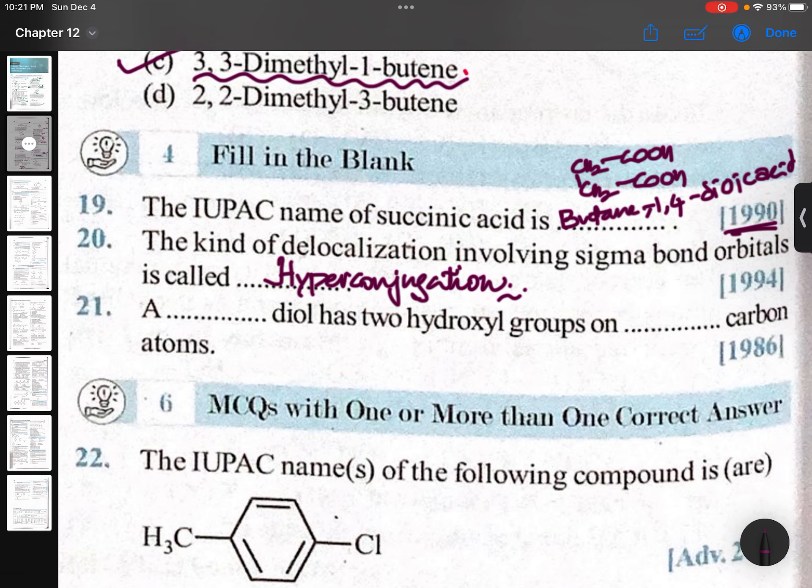A diol has two hydroxy groups on the same carbon atoms. Geminal diol cannot be, not possible. So vicinal diol is only possible. Vicinal diol means two carbon atoms with two OH groups. So here, this blank should be 'adjacent'.